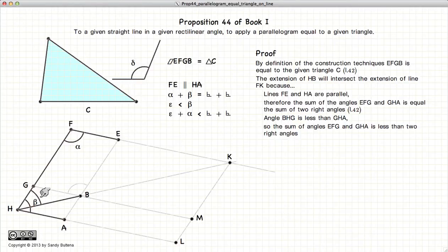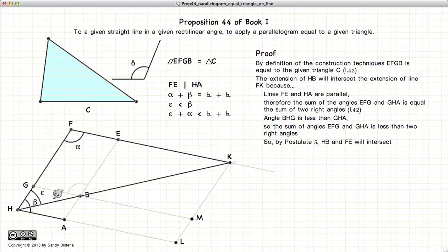alpha plus epsilon is less than 180 degrees. And according to postulate 5, that means that FE and HB will meet at some point if the lines are extended. So there we've demonstrated that K is a point that actually exists.